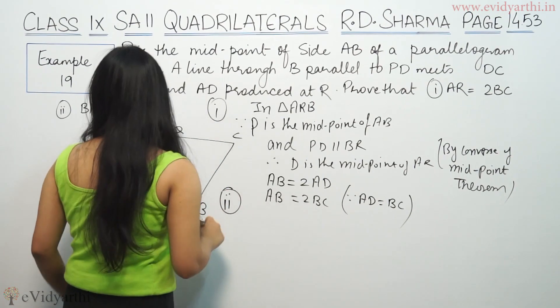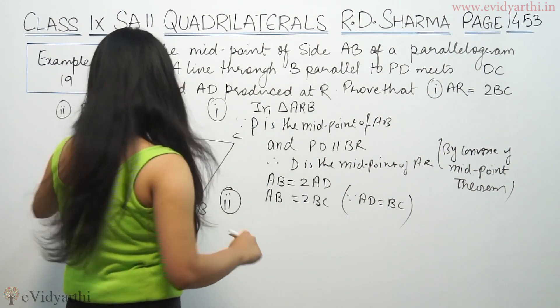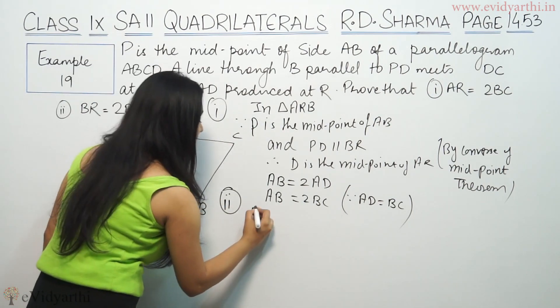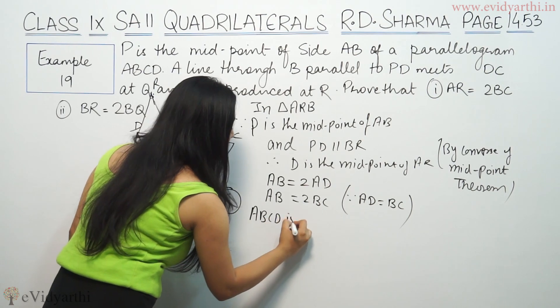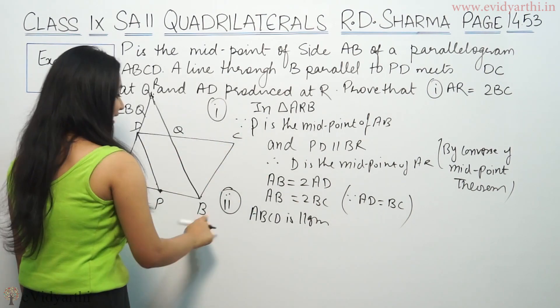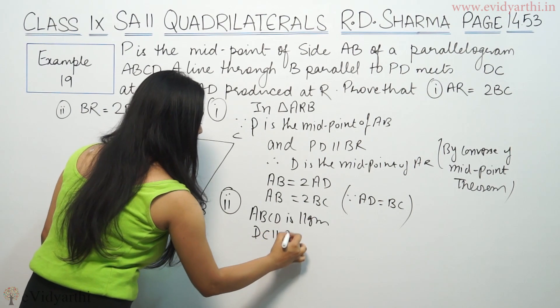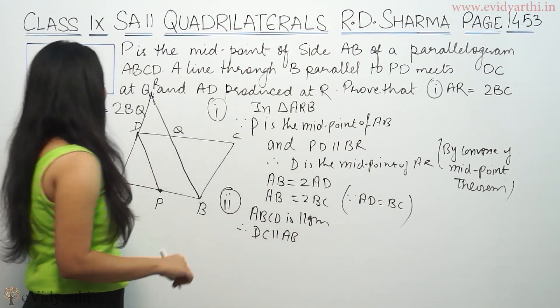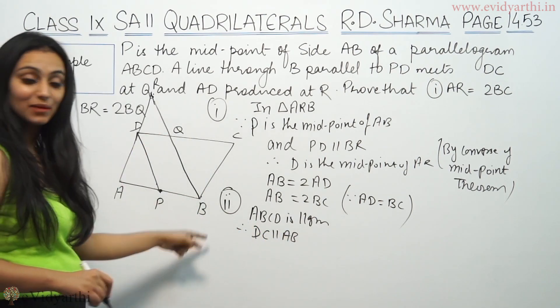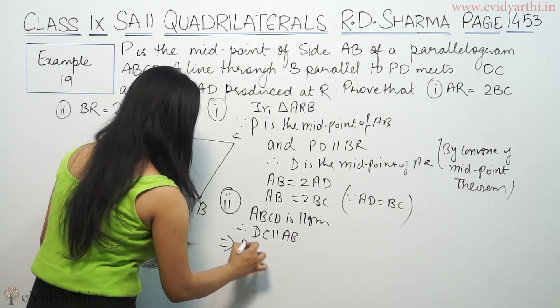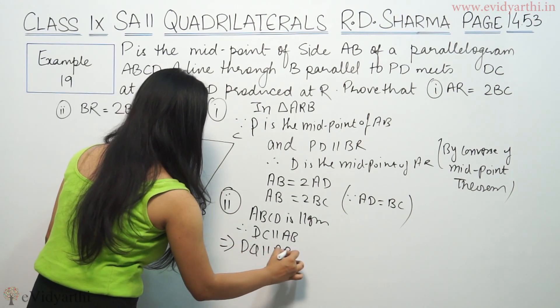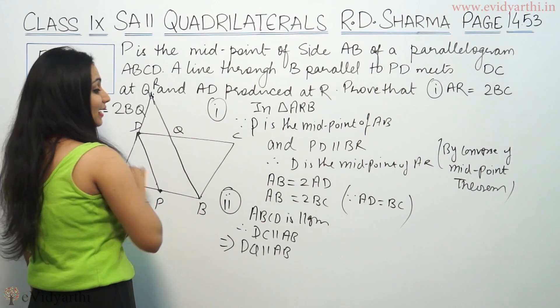For part two, we have to prove that BR is twice BQ. ABCD is a parallelogram, that means DC is parallel to AB. DC parallel to AB means DQ is parallel to AB. And D is already the midpoint.